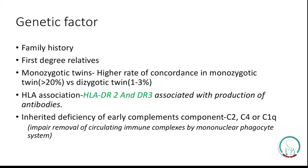Regarding family history, family members of SLE patients have a higher chance of developing the disease; first-degree relatives have up to 20% chance. There is a higher concordance rate in monozygotic twins compared to dizygotic twins. HLA-DR2 and DR3 are associated with antibody production. There is inherited deficiency of early complement components like C2, C4, or C4AQ — these complements are involved in removal of immune complexes by mononuclear phagocytes, so their deficiency means increased immune complex deposition. Deficiency of C3b might also be present. More deposition of immune complexes in glomeruli or blood vessels causes disease presentation.